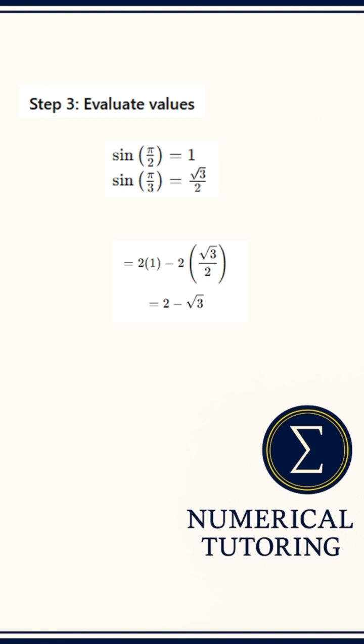Sine of π over 3 is √3 over 2. So the result is 2 times 1 minus 2 times √3 over 2. That simplifies to 2 minus √3. Therefore the final answer is option C.